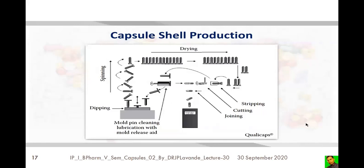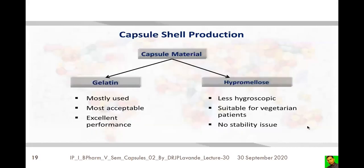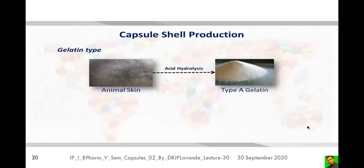The steps associated with capsule shell production are: dipping of the pins, spinning of the pins, drying of the pins coated with gelatin material, stripping the dried gel material, cutting it at a specified length, and then joining the body with the cap to form a capsule. The materials used for the capsule shell include gelatin and hydroxypropyl methylcellulose (HPMC).